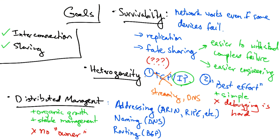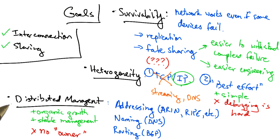On the downside, the internet has no single owner or responsible party. And as Clark said, some of the most significant problems with the internet relate to the lack of sufficient tools for distributed management, especially in the area of routing. In such a network where management is distributed, it can often be very difficult to figure out who or what is causing a problem.